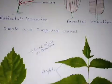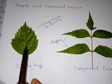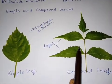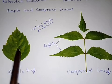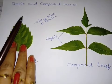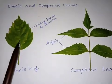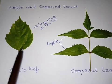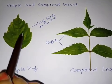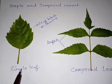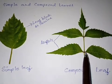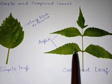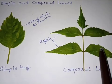Next we come to simple and compound leaf. This is a simple leaf and this is a compound leaf. Why is it a simple leaf? Because it is having a single lamina or single leaf blade. In a compound leaf, the whole lamina is divided into small leaflets.